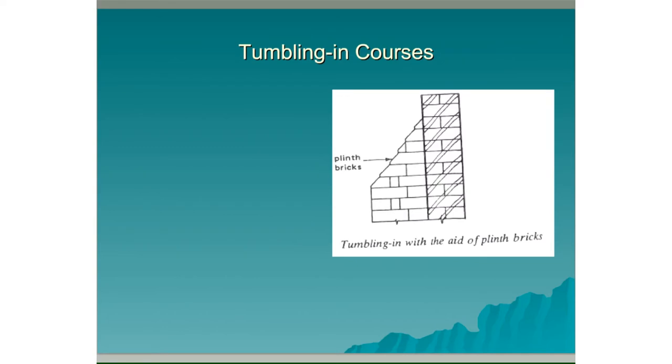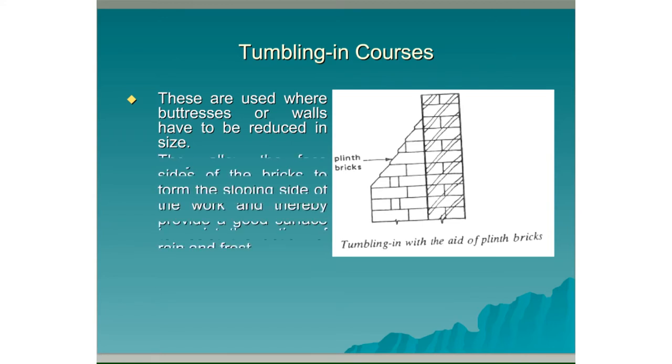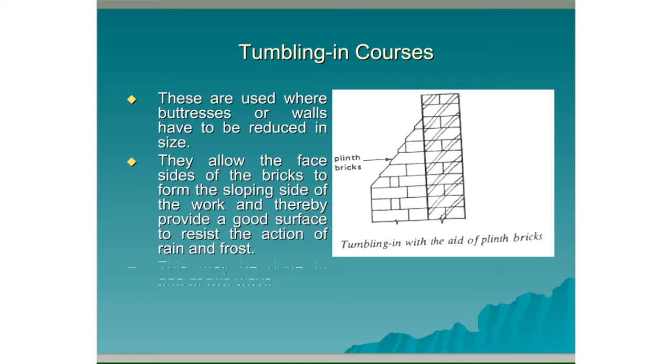Tumbling in courses: These are used where buttresses or walls have to be reduced in size. They allow the face sides of the bricks to form the sloping side of the wall and thereby provide a good surface to resist the action of the rain and frost. This may be done in one of two ways.